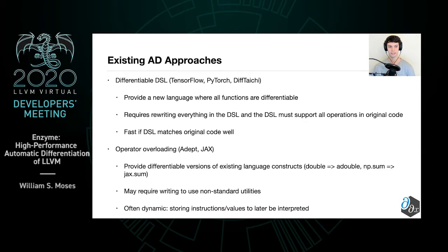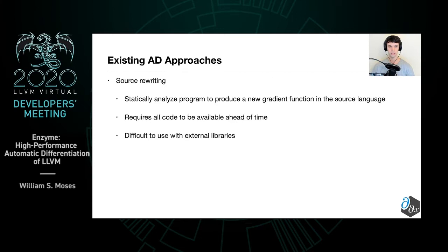The second technique is known as operator overloading, in which a tool provides a differentiable version of existing language constructs such as types or functions. While this requires less rewriting, the user may still need to rewrite some code to use the non-standard language utilities. These also tend to be dynamic, storing instructions and values to be later interpreted rather than statically compiled. The third technique is source rewriting, in which the tool statically analyzes the program to produce a new gradient function, though it requires all code to be available ahead of time, making it difficult to use with external libraries.